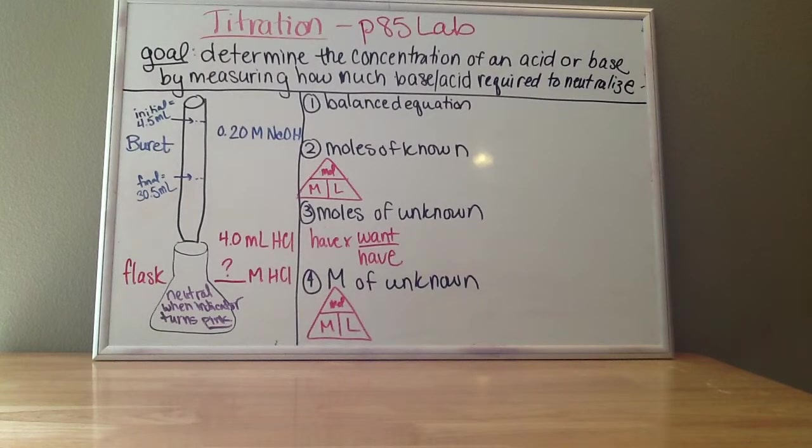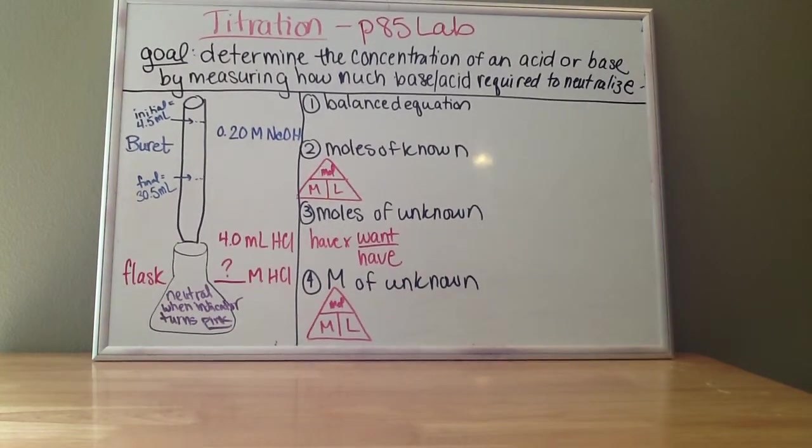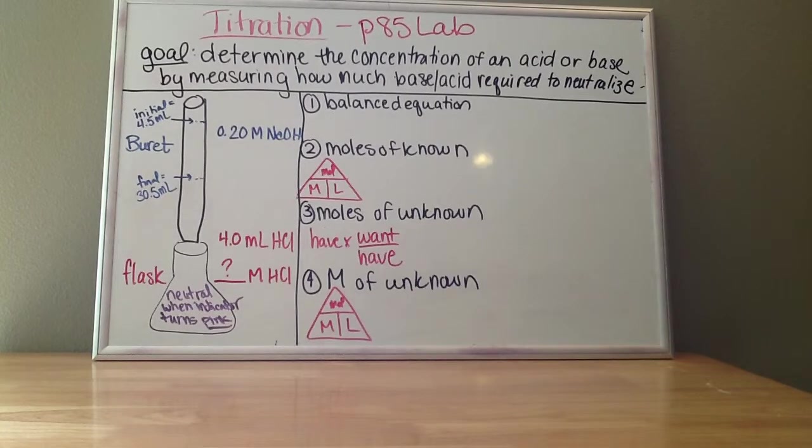Again, the calculations, the steps will always be similar when you're doing a titration. There's four basic steps you're going to do. The first step is to write out the balanced chemical equation.